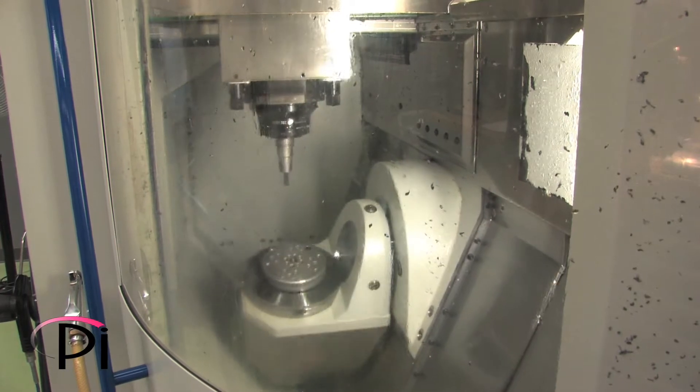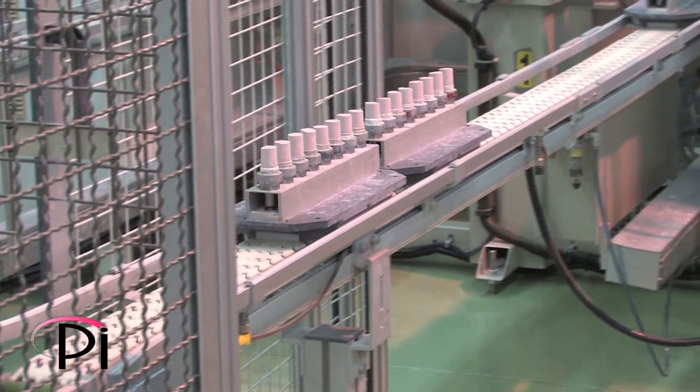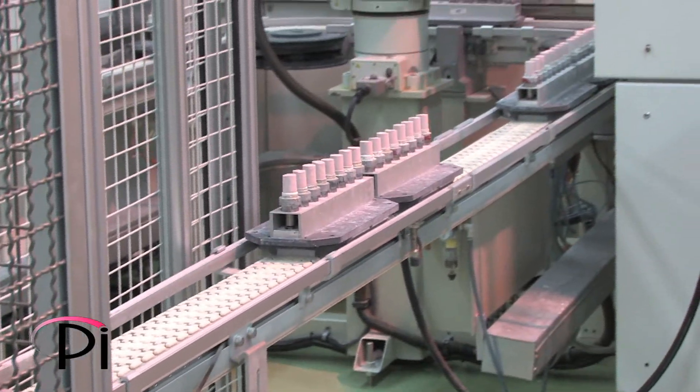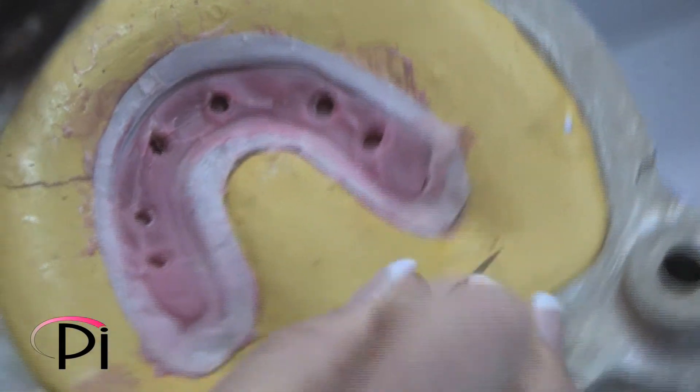For some partial and all total arch rehabilitations, a gum tissue veneer is also applied to give the prosthesis an unchanging natural appearance in relation to the biologic tissues underneath.